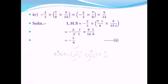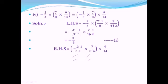Now come to the right-hand side: -2/3 × 7/8 × (9/14). We solve the bracket value first. 3 and 7 are not divisible by the same table, so write as-is. But 2 and 8 are divisible by table 2: 2×1=2, 2×4=8. The third value is written as-is.